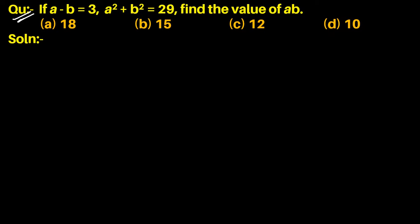The question: if a minus b equals 3 and a squared plus b squared equals 29, find the value of ab. In this question, it is given that a minus b equals 3 and a squared plus b squared equals 29. We use the identity a squared plus b squared equals a minus b whole square plus 2ab.